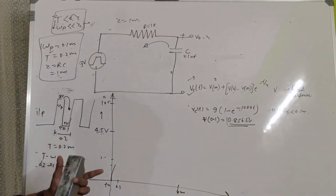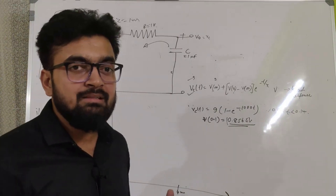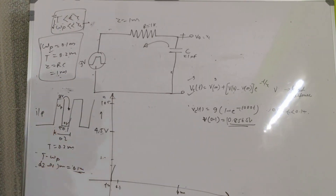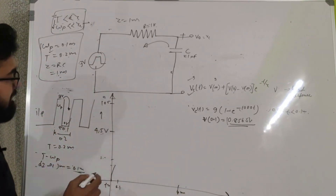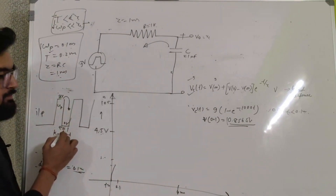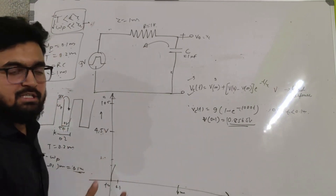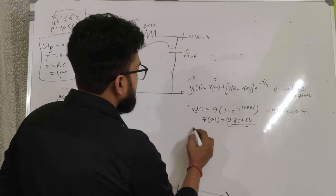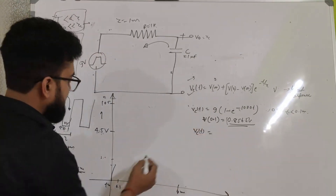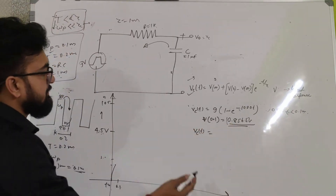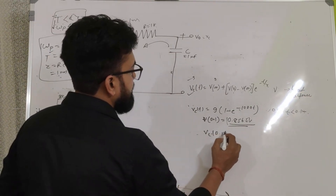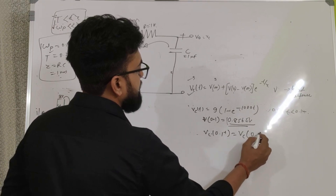The maximum voltage the capacitor could charge to is 9 volts, but it only reaches 0.8565 volts — far short of the maximum. Now, since we are switching the input from 9 volts to 0 volts, the capacitor will start discharging from here on. The value at T = 0.1ms just after switching is still 0.8565 V, since Vc(0.1⁺) = Vc(0.1⁻).